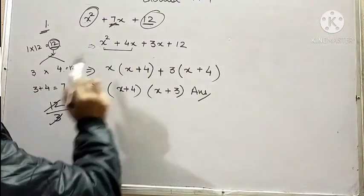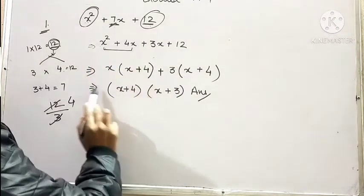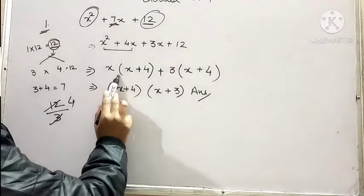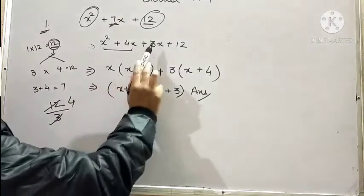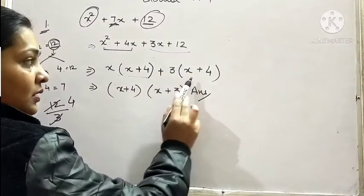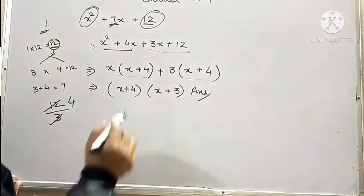Out of these two terms, we find that here x is common. We take out x as common. What is left? x plus 4. Here, 3 is common. What is left? x plus 4. Always remember, we will obtain the same term in the bracket.